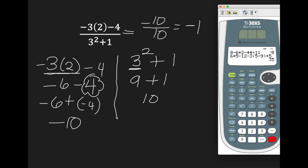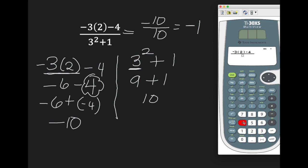If you use the calculator, clear your screen. Since it's a fraction, we're going to use the fraction function n over d. In the numerator I have negative 3, then open parentheses, then subtract 4. Then down to the denominator: 3 squared, and add 1. Arrow to the right, everything looks correct, and hit enter. Notice my answer is negative 1.